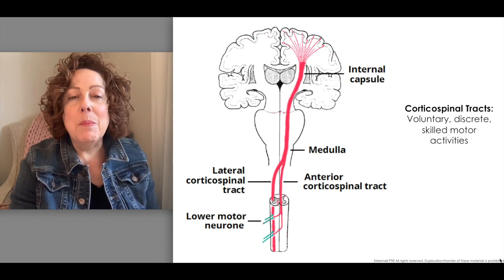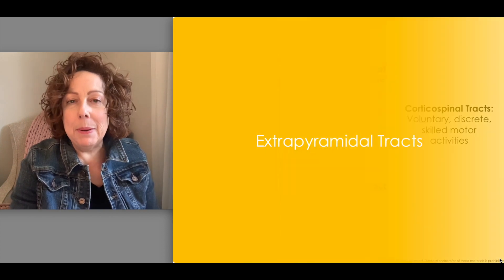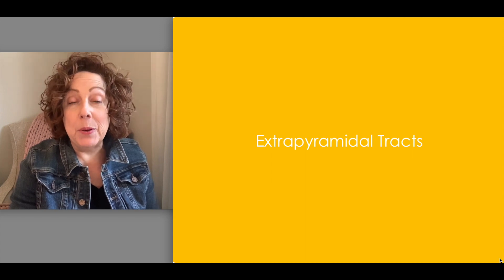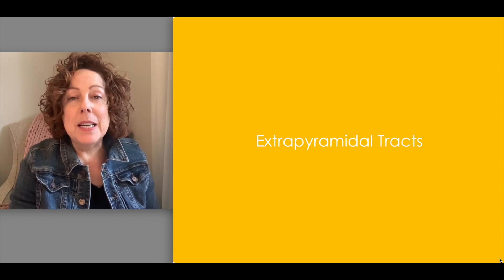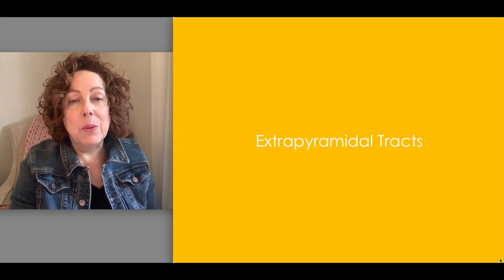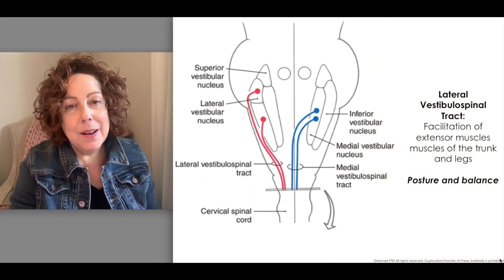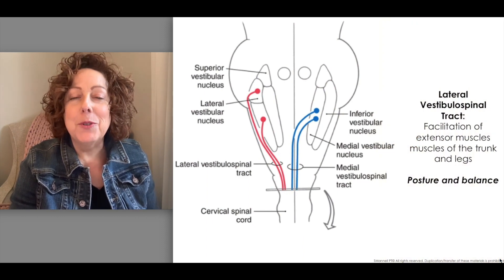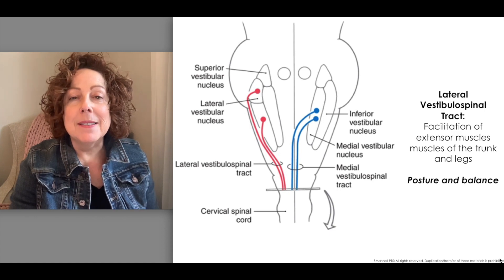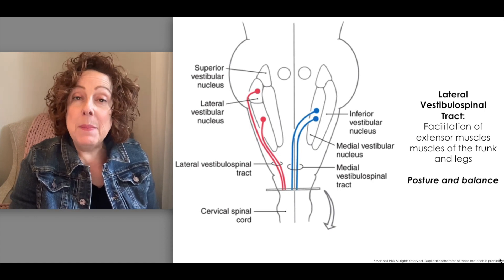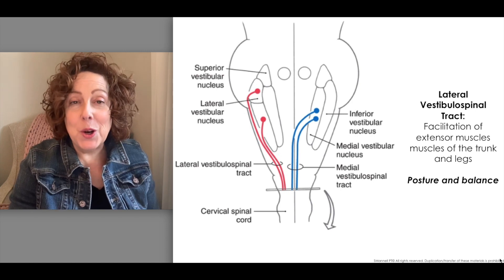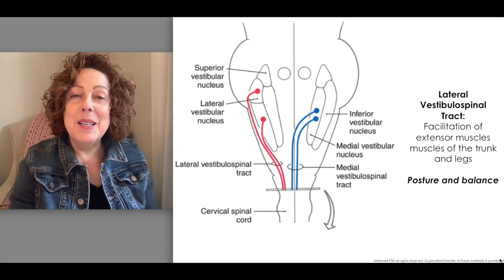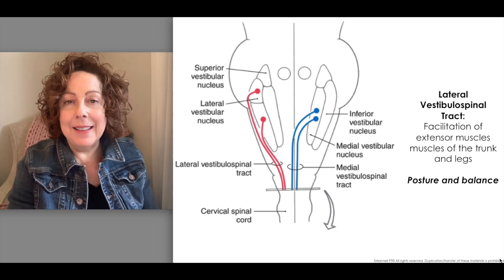Next, we need to remember a couple of the extrapyramidal tracts. In particular, the lateral vestibulospinal tract, which, as the name suggests, flows from the vestibular nuclei to the muscles of the body and primarily impacts extensor tone in the muscles of the trunk and the legs.